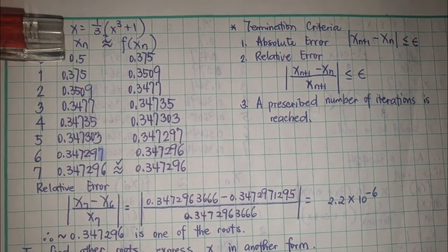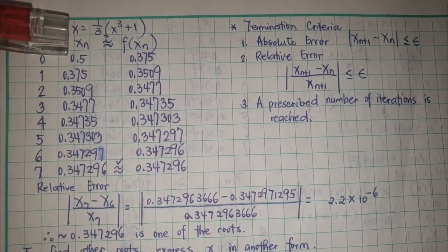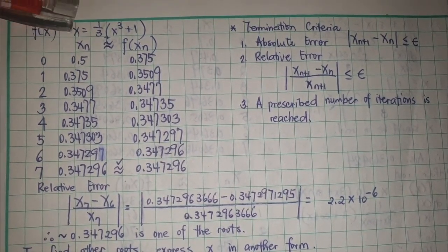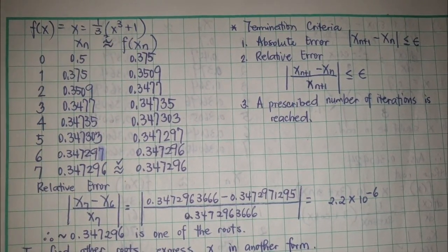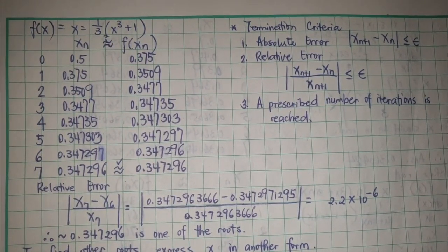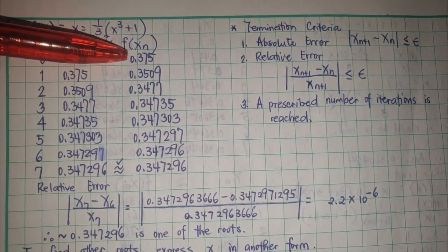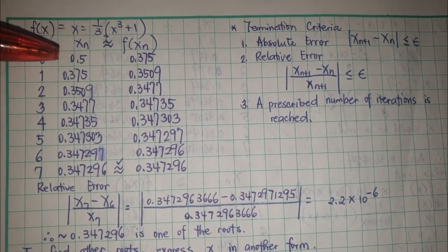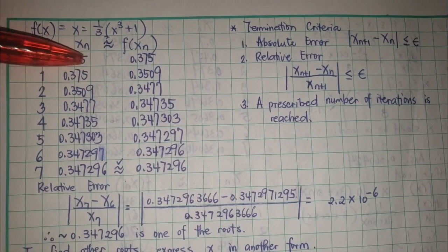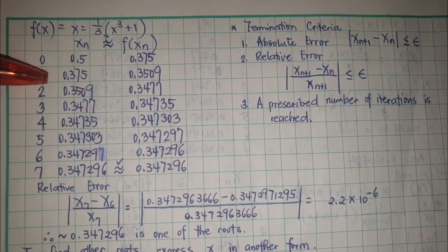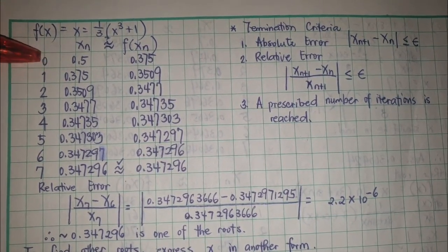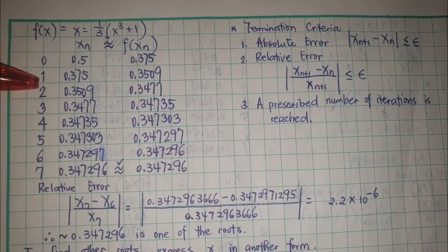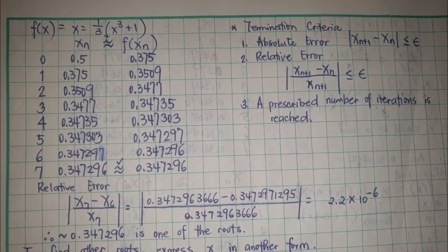When I have 0.5 here and plug in 0.5 in the given function, I'll get 0.375. For method of successive substitution, whatever y you have, you plug in as x to be used in the next step. Since this is the guess, I would assume this to be 0 iteration. The first iteration is the first step after your first guess.